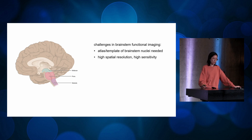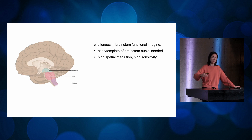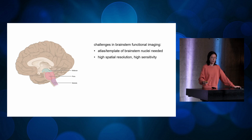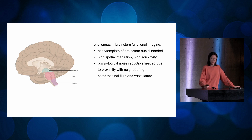Another requirement for brainstem imaging is high spatial resolution and high sensitivity. These nuclei are really small, so we need slices that are very close together so you can see the nuclei individually instead of blurring them into one big voxel or brain area.